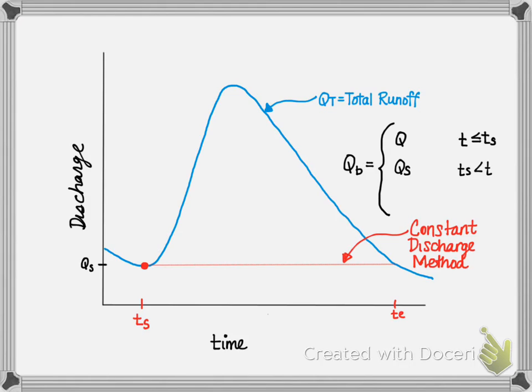QB is equal to the flow rate at the start when T is between TS and TE, from the start to the end. And finally, the base flow is again equal to the total runoff Q when T is greater than TE.